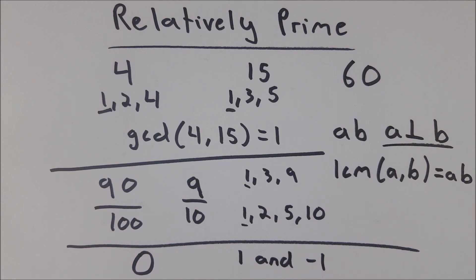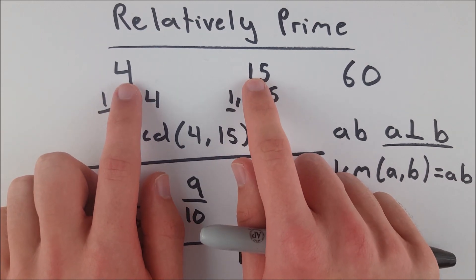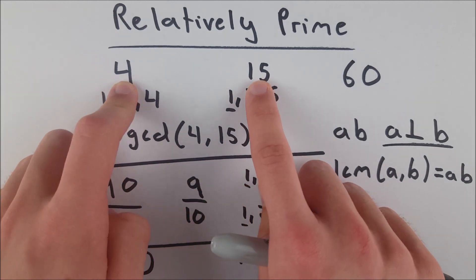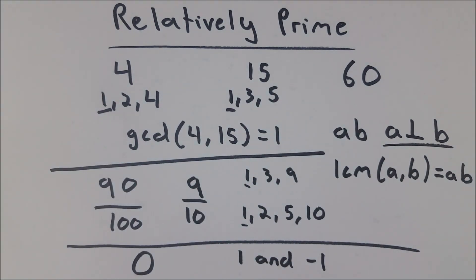To recap: two numbers are relatively prime if their greatest common factor is one. The numbers themselves don't have to be prime, but if they have no common factor greater than one then they are relatively prime to each other. Also, if you have two distinct prime integers, they are always relatively prime, because each one has no factor other than itself and one. These are also called mutually prime or co-prime.